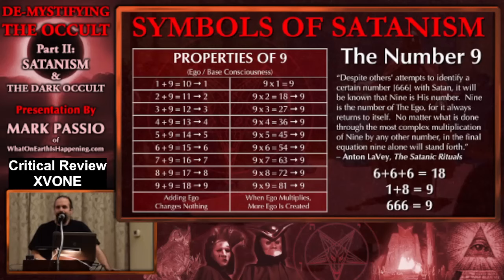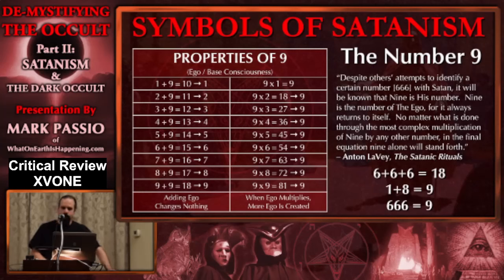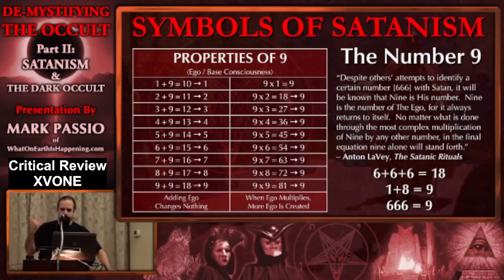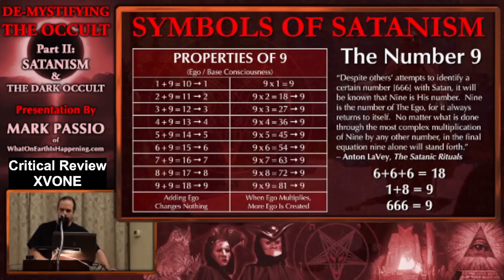Let's look at some Satanic numerology briefly. The number nine is Satan's number in Satanism. Here are LaVey's own words from The Satanic Rituals: 'Despite others' attempts to identify a certain number' — referring to 666 — 'with Satan, it will be known that nine is his number.' Nine is the number of the ego, for it always returns to itself. No matter what is done through the most complex multiplication of nine by any other number, in the final equation, nine alone will stand forth.